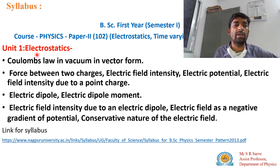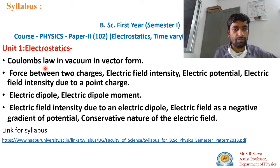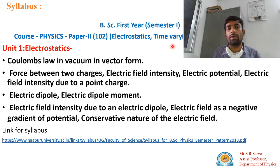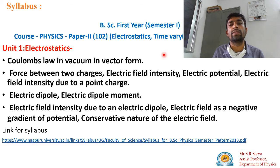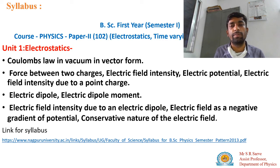First of all, we will learn about what is electrostatics, and after that, Coulomb's law, then force between two charges, and electric field intensity. The next unit will be your time-varying field and electric current, which we will discuss in the second unit. If you want to learn about the syllabus for BSC 1st, a link is provided in the description box or I will send it to your group. Click on that link, you will find the PDF and can easily view the syllabus.